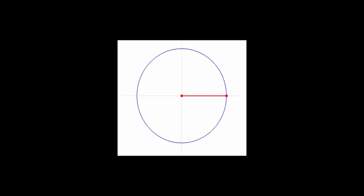Let's draw our circle one more time and again let's lay our radius out along the circle. Here again we've got one radian measure and we'll have 2 and 3 and then up to pi.